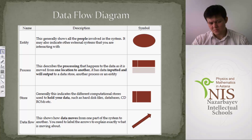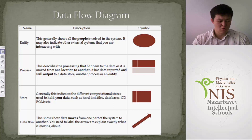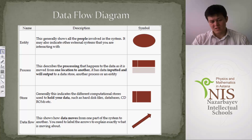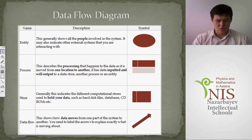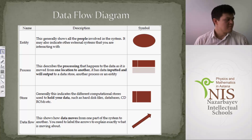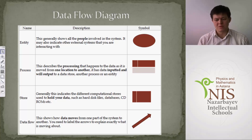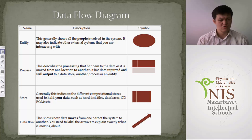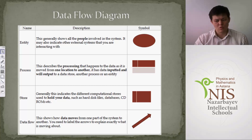The next element is data store, which indicates the computational storage used to hold your data — such as hard disk files, databases, CD-ROMs, etc. It's like a warehouse where you can hold your data temporarily or long-term. The last element is data flow, which shows how data moves from one part to another in the system. You need to label the arrows to explain exactly what they're representing. Some students draw their DFDs without labeling the data flows — this is very important and students should always label them.